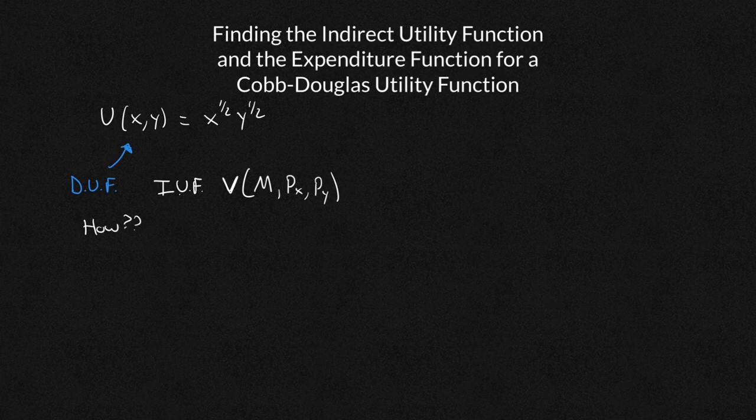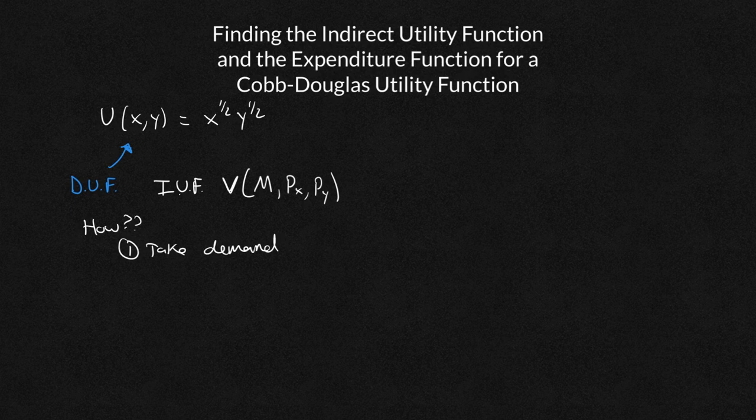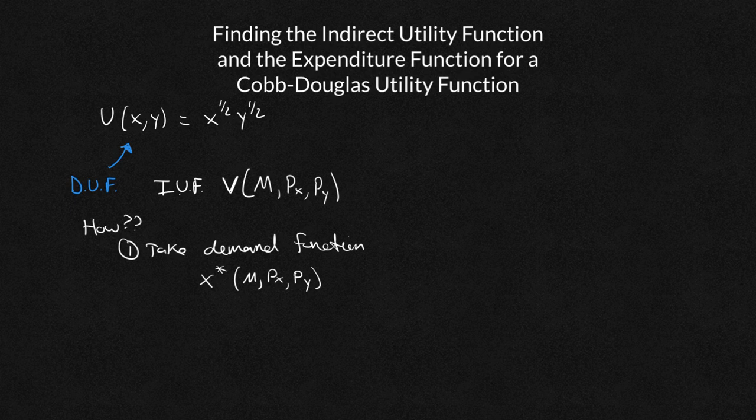Well, it's a pretty quick two-step process. First, you're going to take your demand functions, meaning my x star, which we know is a function of M, P of x, P of y. Now, technically, someone might say, wait a minute, for Cobb-Douglas, it's not a function of P of y. Sure, but just theoretically in general, you have your demand for x.